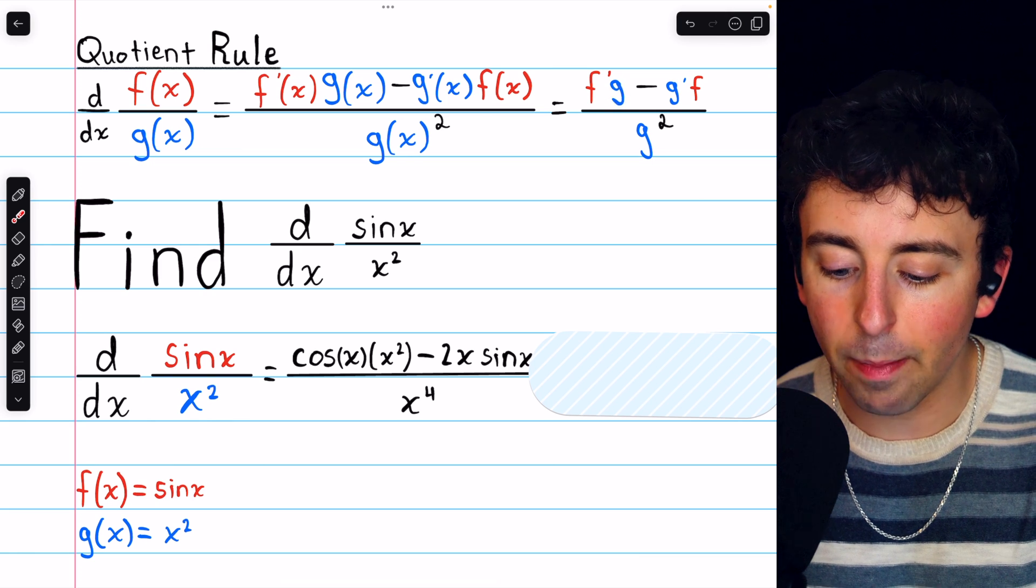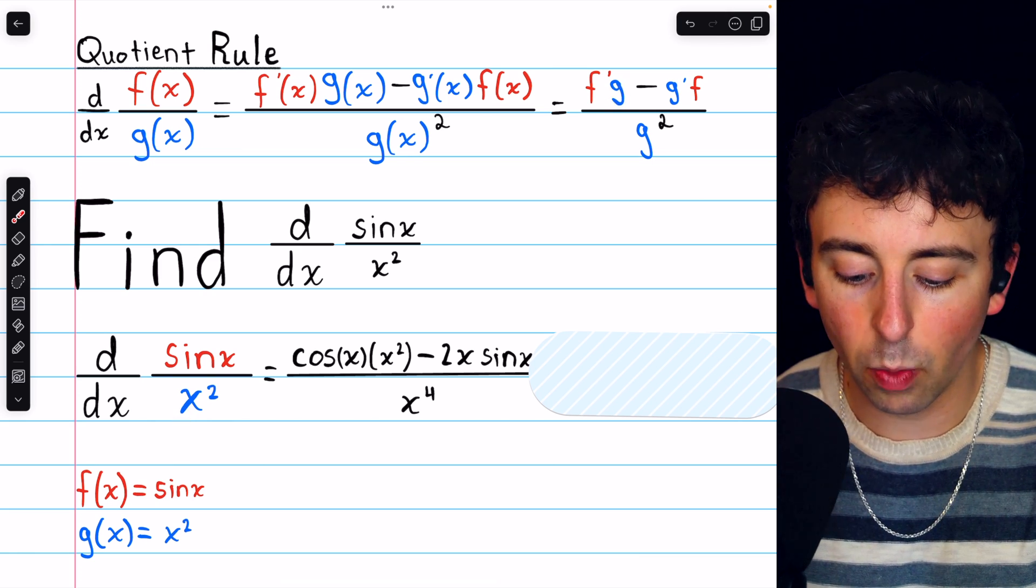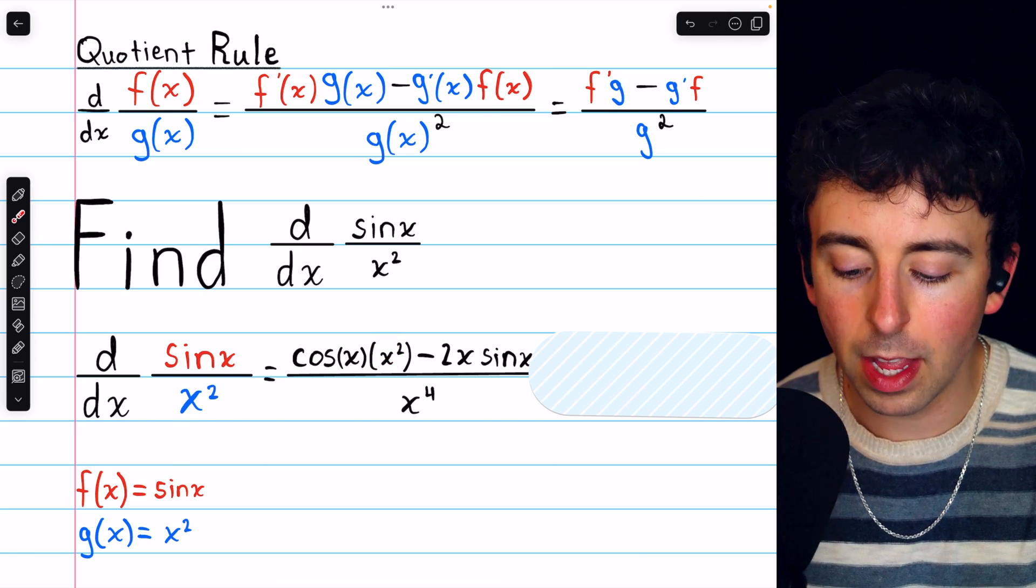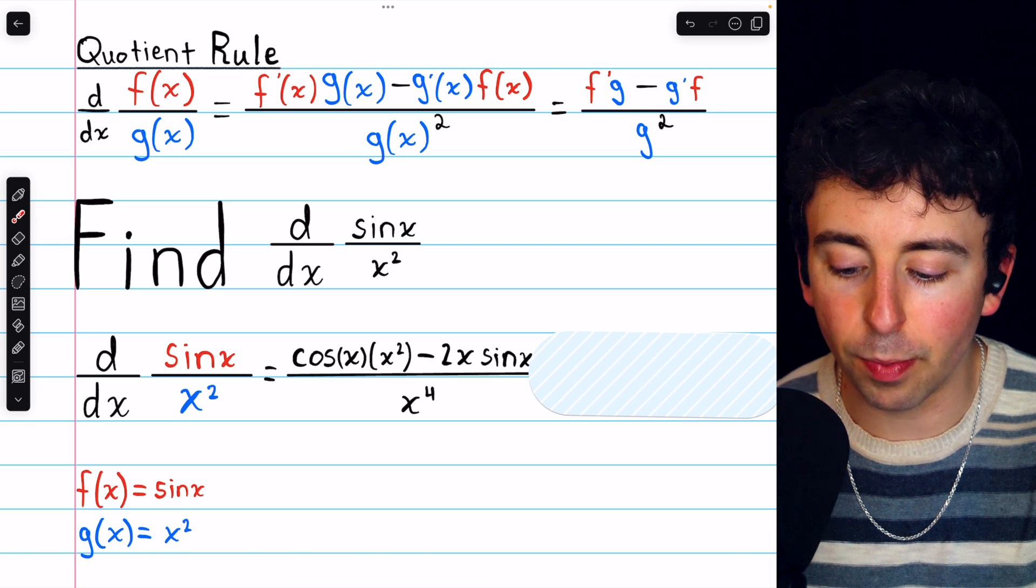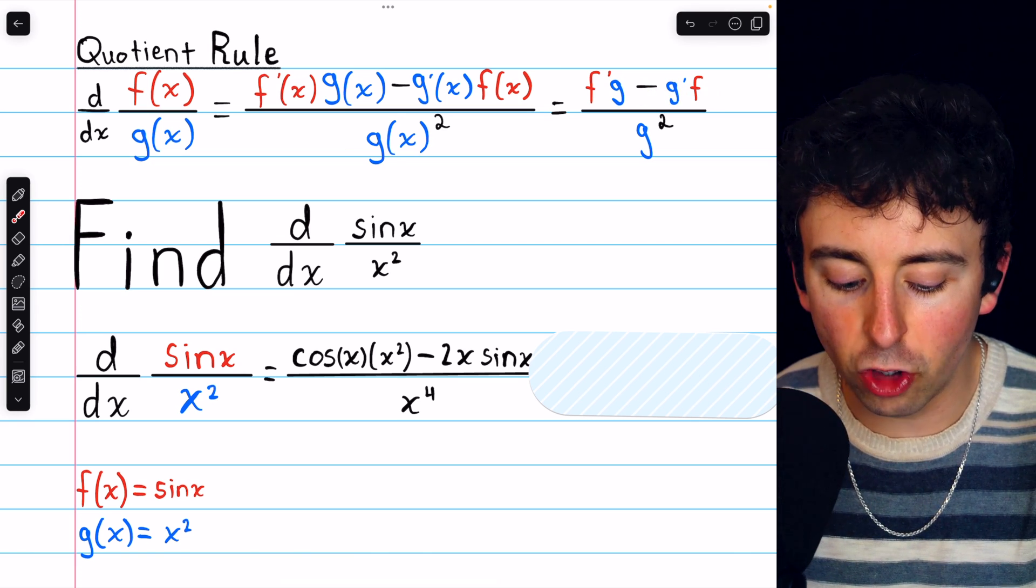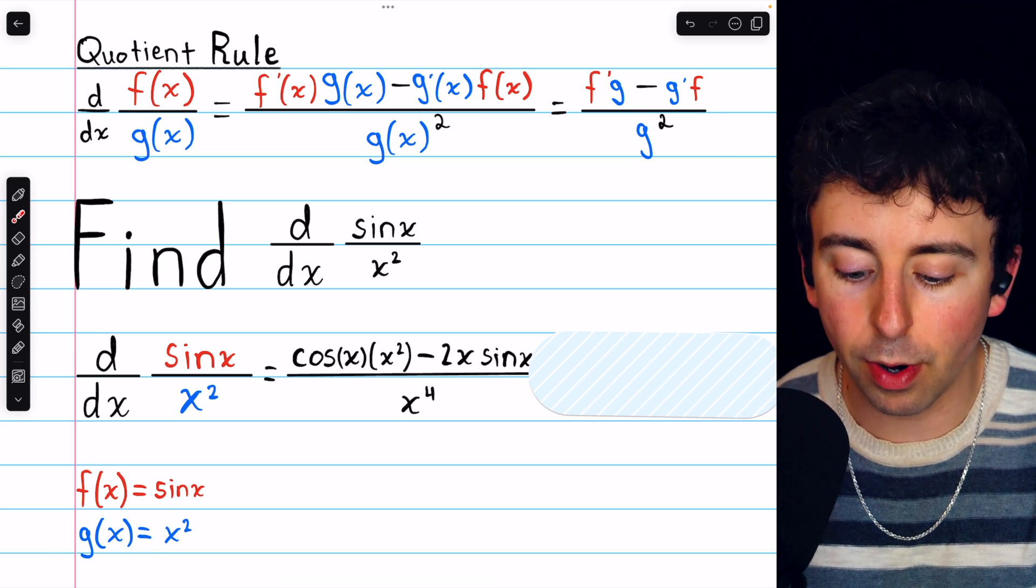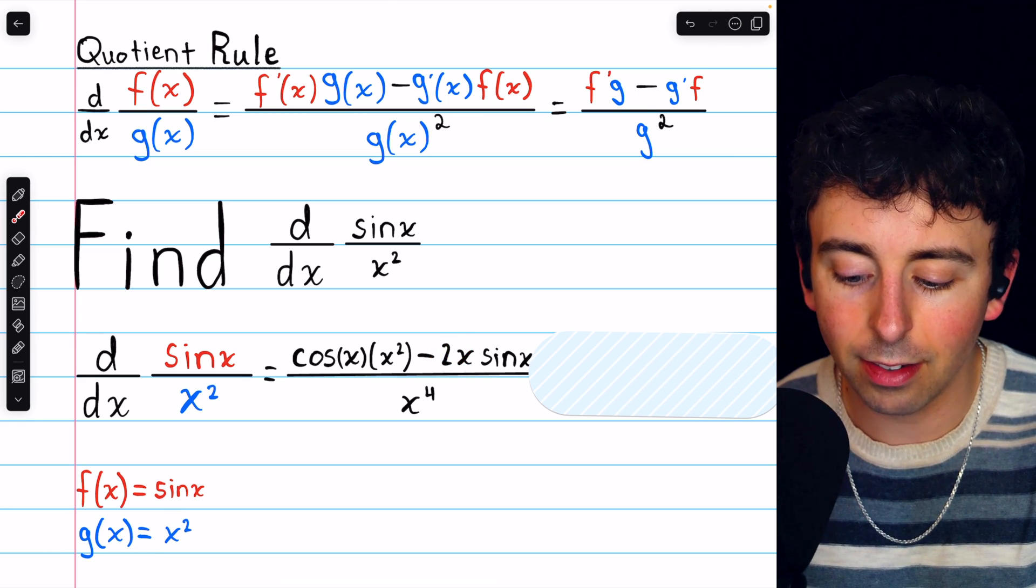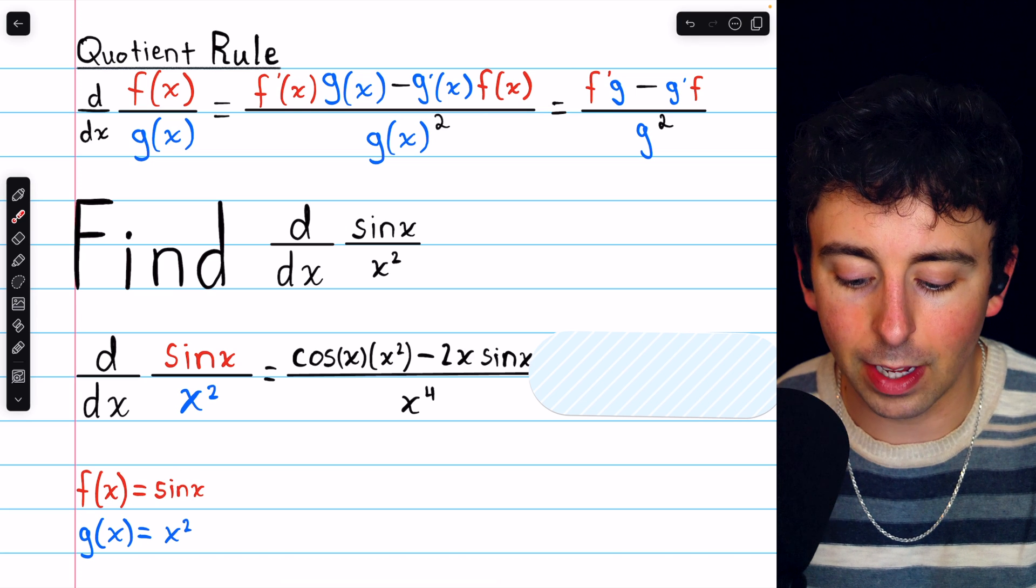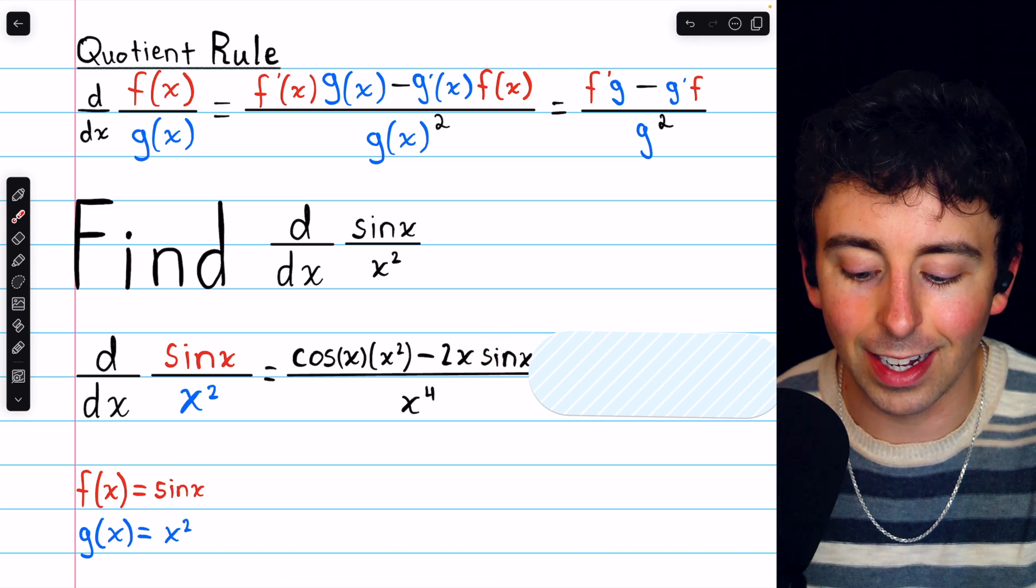We then have to multiply that by g, the denominator, so we multiply by x squared. Then subtract g' times f. g is that function in the denominator x squared, so g' is the derivative, 2x, multiplied by f, which is sine x.